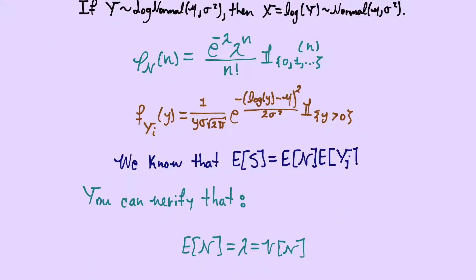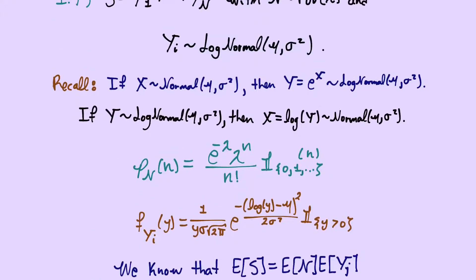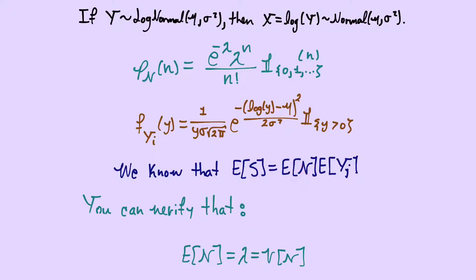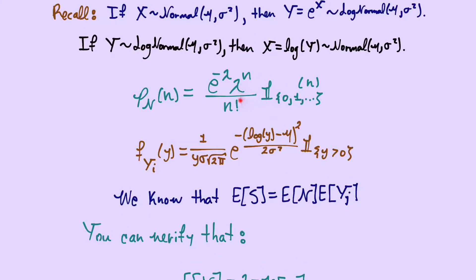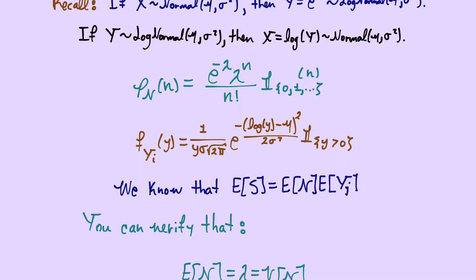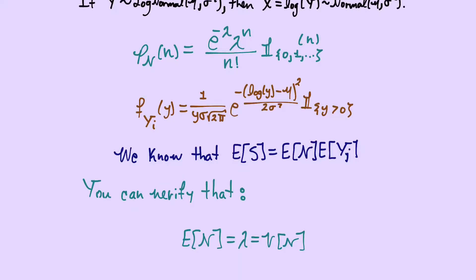In the collective risk model, the expected value of S equals E[N] · E[Y_j]. For the Poisson distribution, it is a very well-known result that both the expected value and the variance equal λ — the parameter of the distribution. You may already know this, but you can always verify it by computing the corresponding sums.